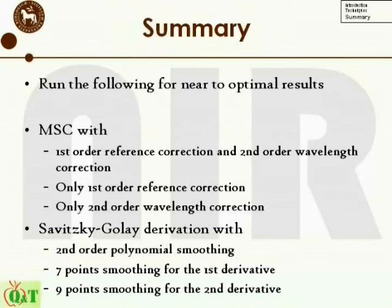We can sum it all up by stating as follows. If you have a set of NIR spectra you would like to use for regression or classification, running them through the following preprocessing methods should result in a near-to-optimal model in the end. MSE with the following settings: first-order reference correction and second-order wavelength correction. Only first-order reference correction, commonly known as basic MSE. Only second-order wavelength correction, commonly known as D-trend. Furthermore, we would like to suggest running Savitzky-Golay with a second-order polynomial smoothing function, with seven-point smoothing for the first derivative and nine-point smoothing for the second derivative.